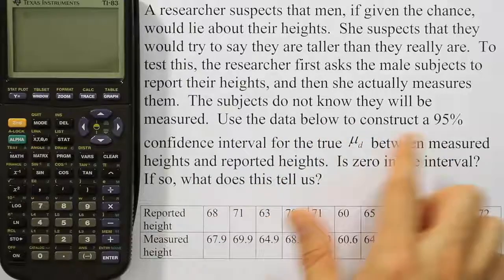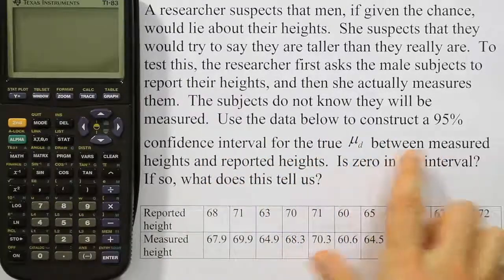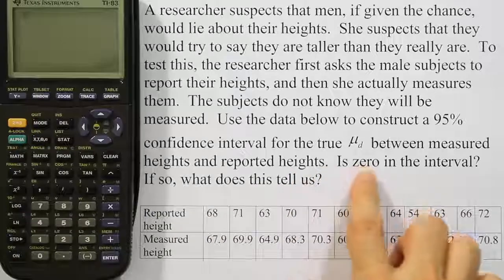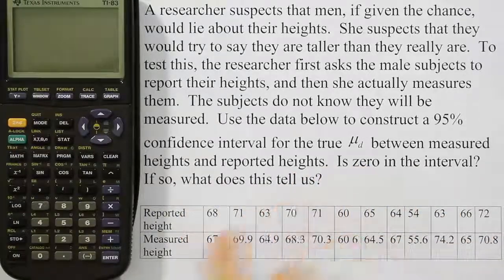Use the data below to construct a 95% confidence interval for the true mean difference between measured heights and reported heights. Is zero in the interval? If so, what does this tell us?